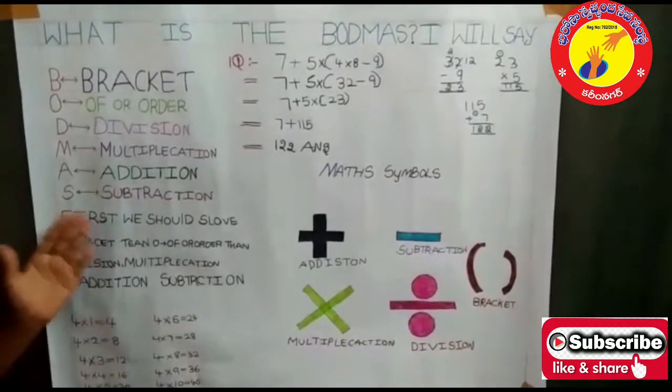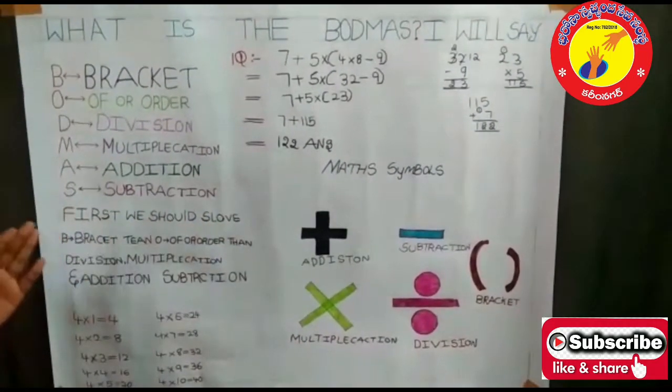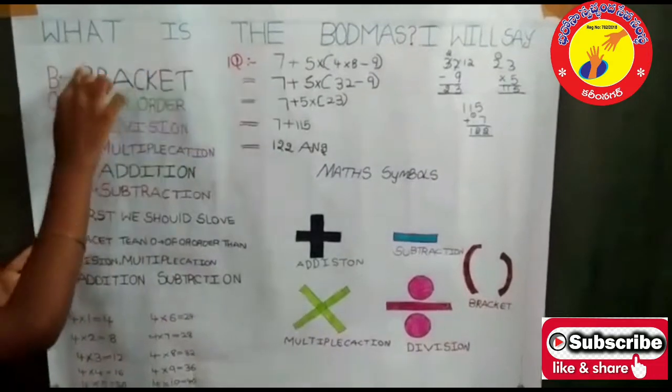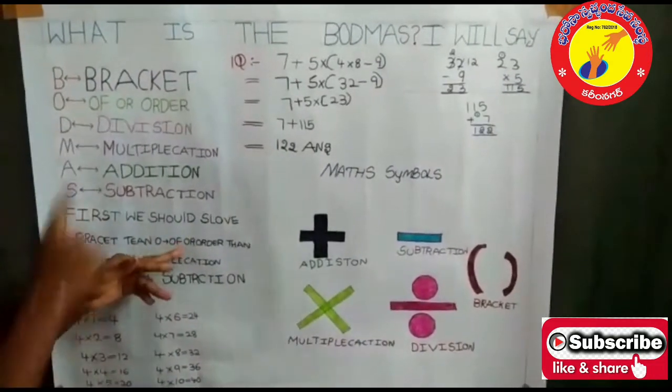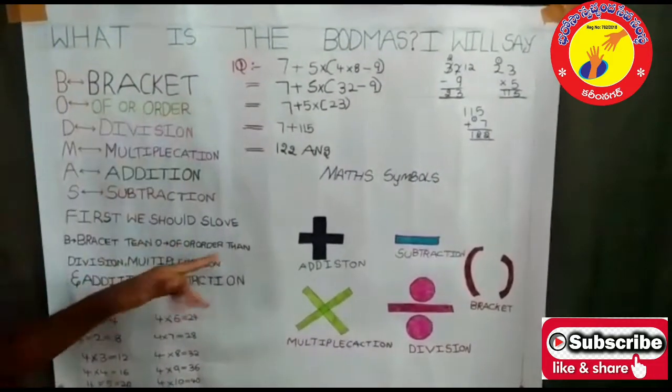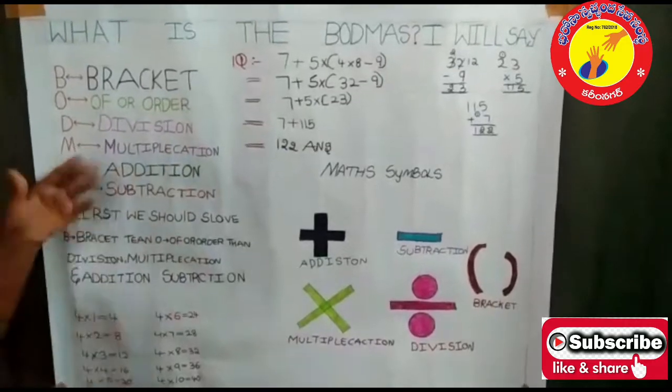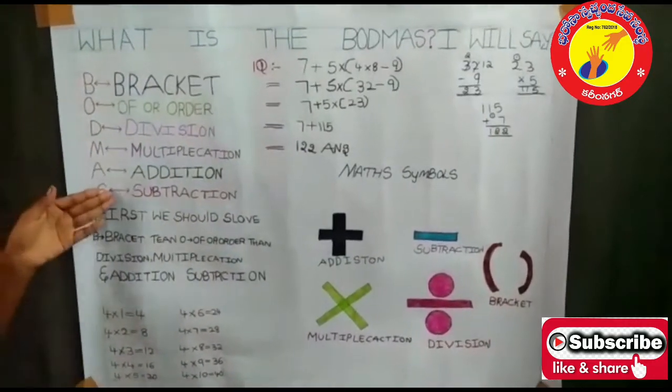So here you see first we should solve from the bracket, then offer order, then division, then multiplication, then addition and then subtraction.